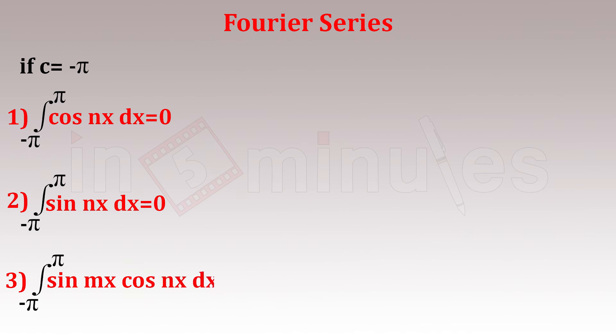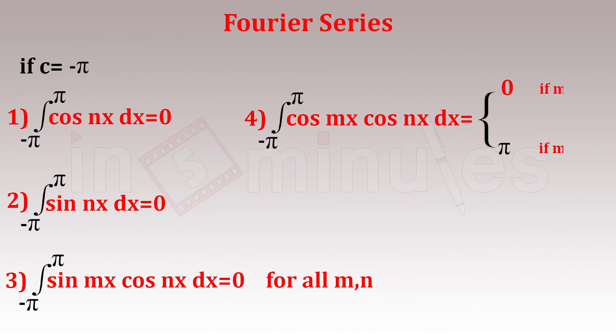This works for all m, n. Fourth is the integral from minus π to π of cos mx cos nx dx, which equals 0 if m is not equal to n. If m equals n, your value will be π.